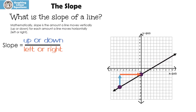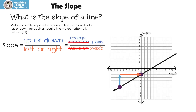Let's try to figure out the formula. We know the slope is up or down over left to right. That means we're going to move on the y-axis — that's up or down — over how we move on the x-axis — that's left or right. In math, we don't say 'move on the y-axis,' we say 'the change in y.' And for the x-axis, we say 'the change in x.' We also have a really cool symbol — this triangle symbol — that means the change in y over the change in x. And it all means the same thing.